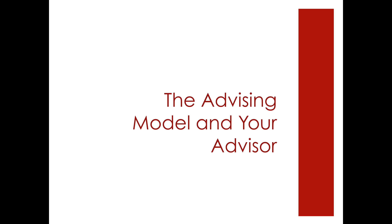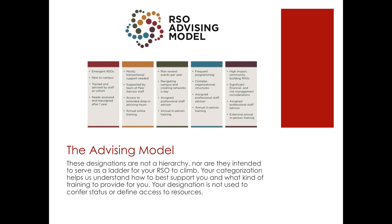Let's shift gears and talk about the advising model and your advisor. The RSO advising model is split up into five different categories. These categories are based on the needs of your RSO and may have varied components such as risk management concerns, budget considerations, and amount of programming. These designations are not intended to be a hierarchy nor are they intended to serve as a ladder for your RSO to climb. Your categorization helps us understand how to best support you and what kind of training to provide, and is not used to confer status or define access to resources.